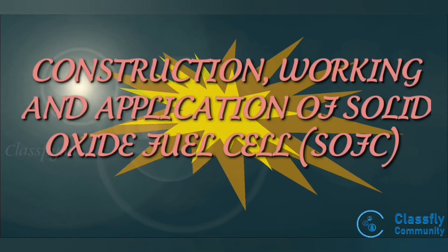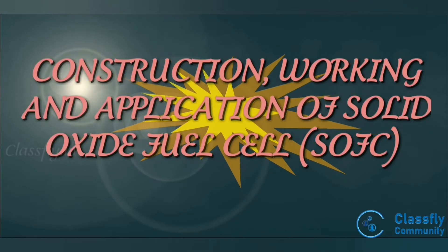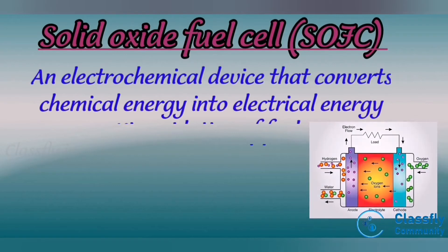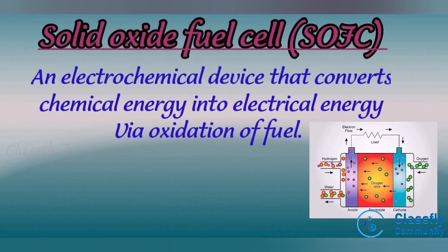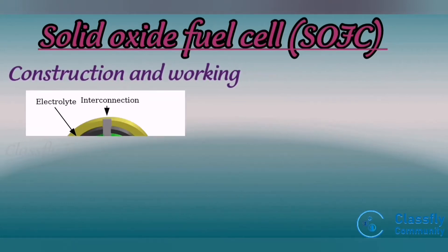Today we are discussing the construction, working, and application of solid oxide fuel cell. A solid oxide fuel cell is an electrochemical device that converts chemical energy into electrical energy via oxidation of fuel. Fuel cells are characterized by their electrolyte material; the solid oxide fuel cell has a solid oxide or ceramic electrolyte.